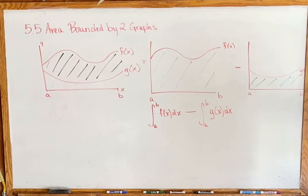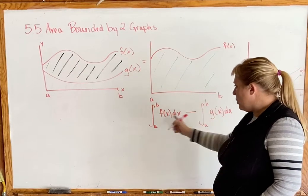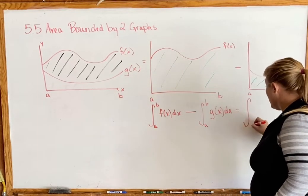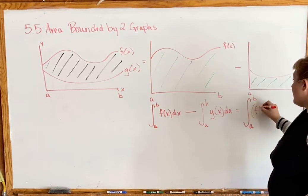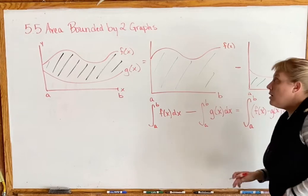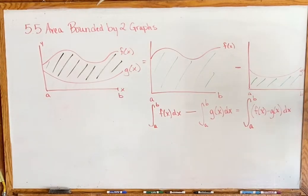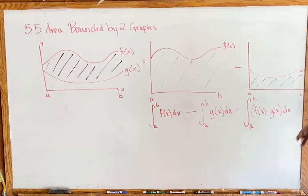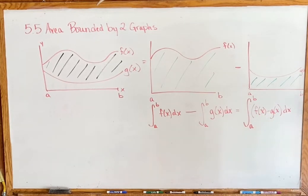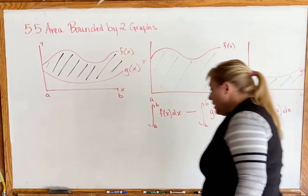Because of our basic anti-derivative rules, as long as the integrals have the same endpoints we can combine them as a single integral and write it as the integral from a to b of [f(x) - g(x)] dx. So when you are given two graphs and the area bounded between them, it's basically a subtraction problem. The first thing you have to do is decide how we're going to subtract the functions, and then we're back to calculus.